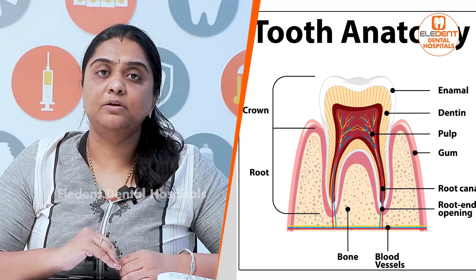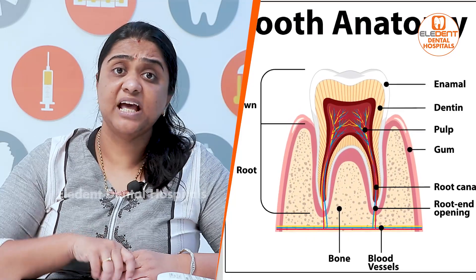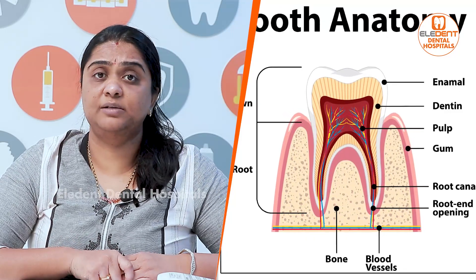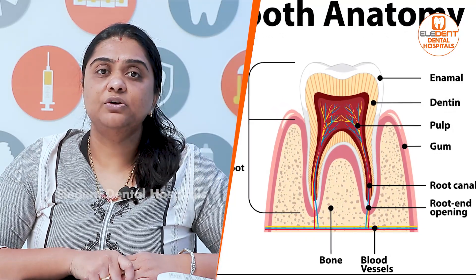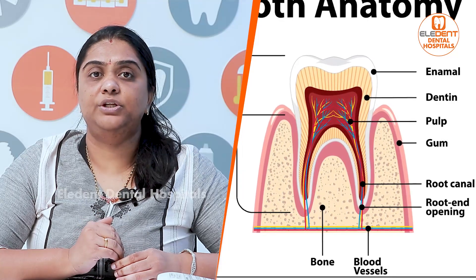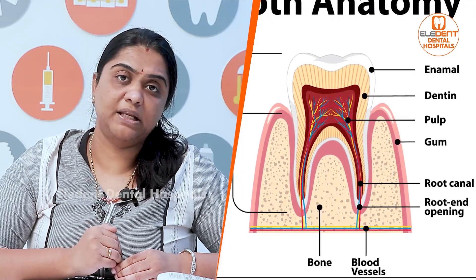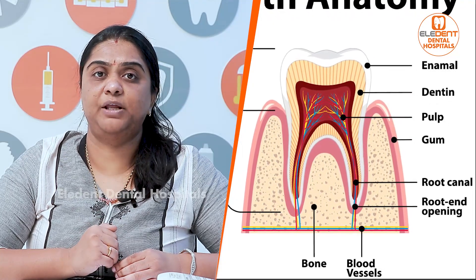We have a protective layer of enamel. This enamel is not too weak. But if the dentine is exposed, it is weak. There is a pulp inside with blood supply and nerve supply. If the enamel is lost, you will get exposed to the pulp.